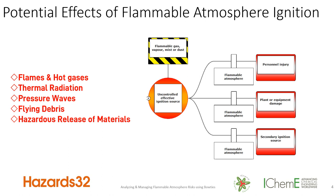There are a number of outcomes from the ignition of a flammable atmosphere. It can generate flames and hot gases, heat or thermal radiation. The explosion can generate a pressure wave that may lead to flying debris or hazardous release of materials — the combustion products may themselves be toxic. We can have effects on people, which is our key focus to protect life, but you may also experience damage to plant, equipment, or buildings, and there may be secondary effects where one ignition becomes a source for a connected piece of equipment.